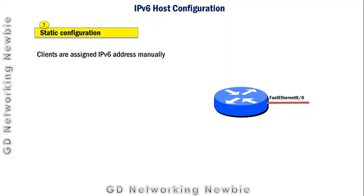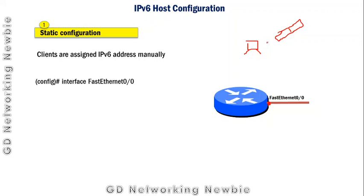The first method is static configuration. For example, there is a router with an interface — this can also be a computer. In the static case, clients are assigned IPv6 addresses manually. We have an IPv6 address in mind, go to the device, and configure that specific IPv6 address to the client machine. For a router interface, first we need to navigate to that particular interface using the appropriate command.